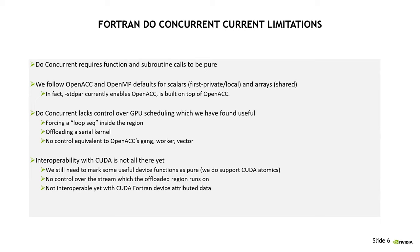Another area where we are a little fuzzy according to the spec: we follow the OpenACC and OpenMP defaults for scalars and arrays within the body of do concurrent — scalars are first-private or local by default, and arrays are shared by default. If you read the Fortran spec on do concurrent, it's very hard to understand exactly what they are trying to say. In fact, standard par currently enables OpenACC and is built on top of OpenACC, though that may be subject to change. We take advantage of a lot of the same runtime in our compiler for do concurrent as for OpenACC and OpenMP.